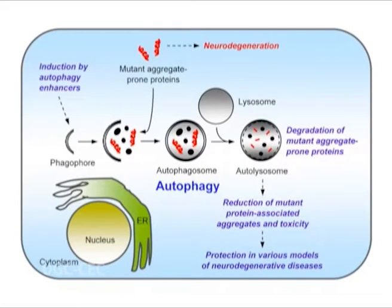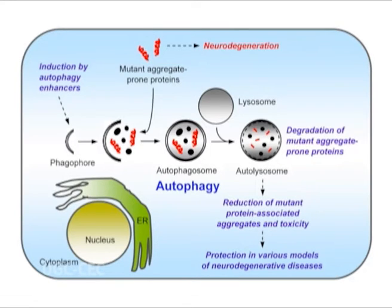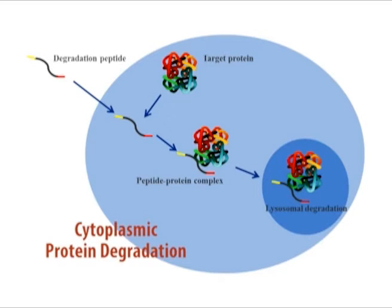One pathway for the uptake of cellular proteins — autophagy — involves the formation of vesicles called autophagosomes, in which small areas of cytoplasm or cytosolic organelles are enclosed in membrane derived from the endoplasmic reticulum. These vesicles then fuse with lysosomes, and the lysosomal enzymes digest their contents. The uptake of proteins into autophagosomes appears to be non-selective, so it results in the eventual slow degradation of long-lived cytoplasmic proteins.